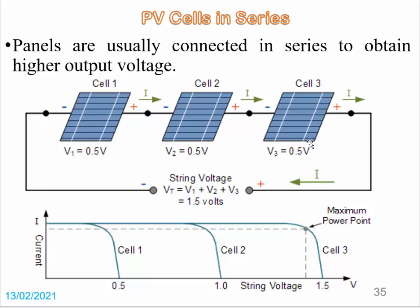For example, we have three solar cells connected in series. The positive of cell one is connected to the negative of cell two, and the positive of cell two is connected to the negative of cell three. We take the output voltage from the positive of cell three and the negative of cell one.